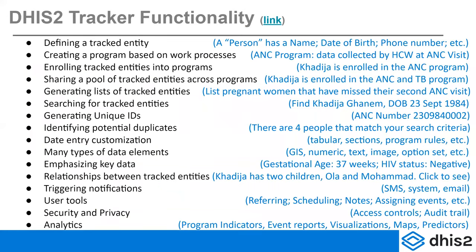I won't go into all the details here about Tracker functionality — we'll be giving you access to all of these slide decks. But I did want to give a basic idea about what it is to run a Tracker program. You define a tracked entity, you create a program based on some kind of work process, and then you enroll your tracked entities into those programs. Importantly, a tracked entity can be enrolled in many programs. The same person can be enrolled in an HIV program, a TB program, a nutrition program, and an antenatal care program. When you combine all of those together, it becomes a kind of shared health record. You can search for tracked entities outside of or inside a program, and if you have access to multiple programs, you can see all health records associated with that person.